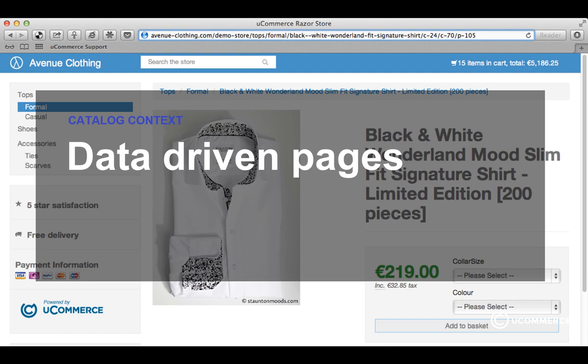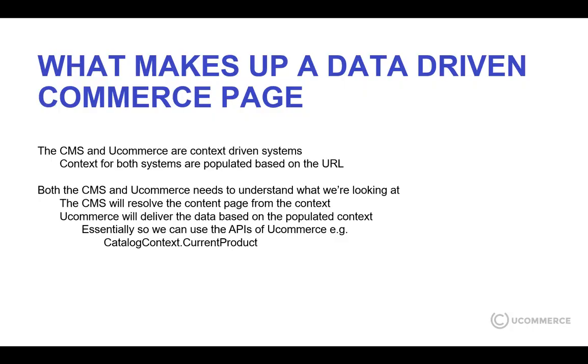When we are presenting a product, it means we only need one dedicated page to present the products in. Based on the payload in the URL that you can see up there, we can switch up the data inside this dedicated product page. Both the CMS and Ucommerce are context-driven systems. The context for both systems is populated by the request — that is, the input we get from the customer when they request a new page.